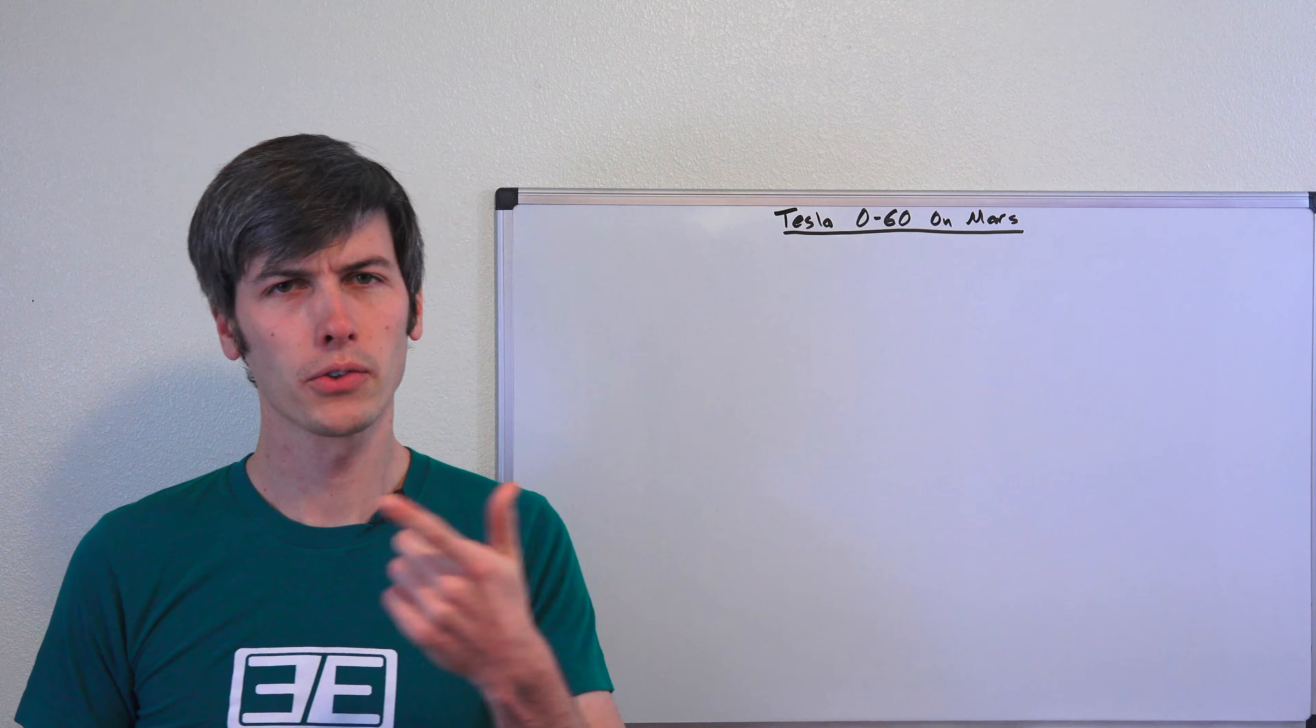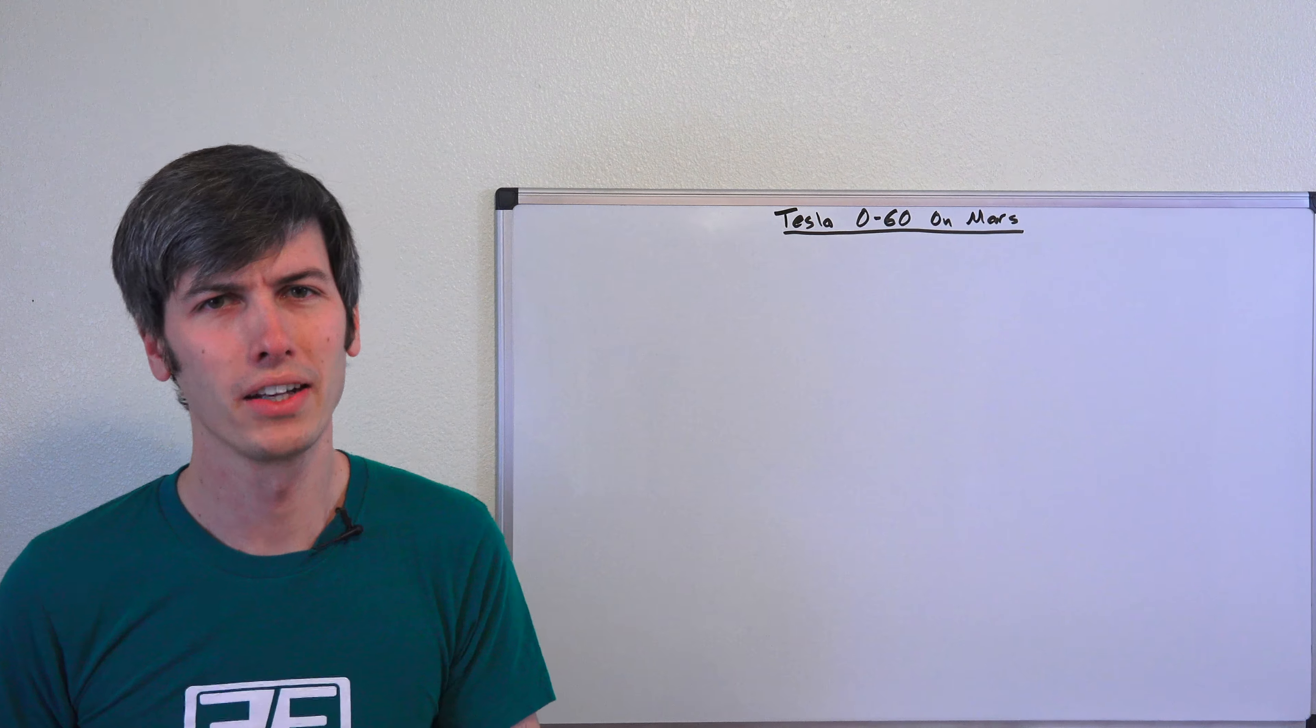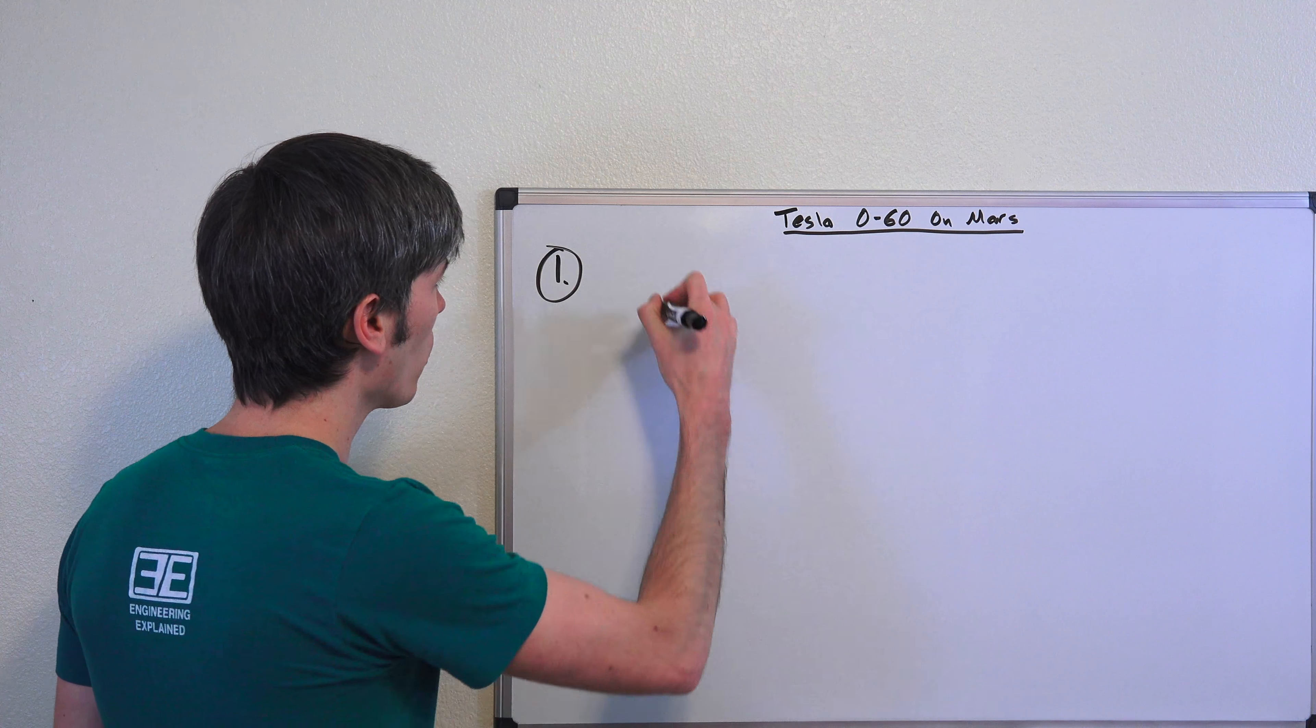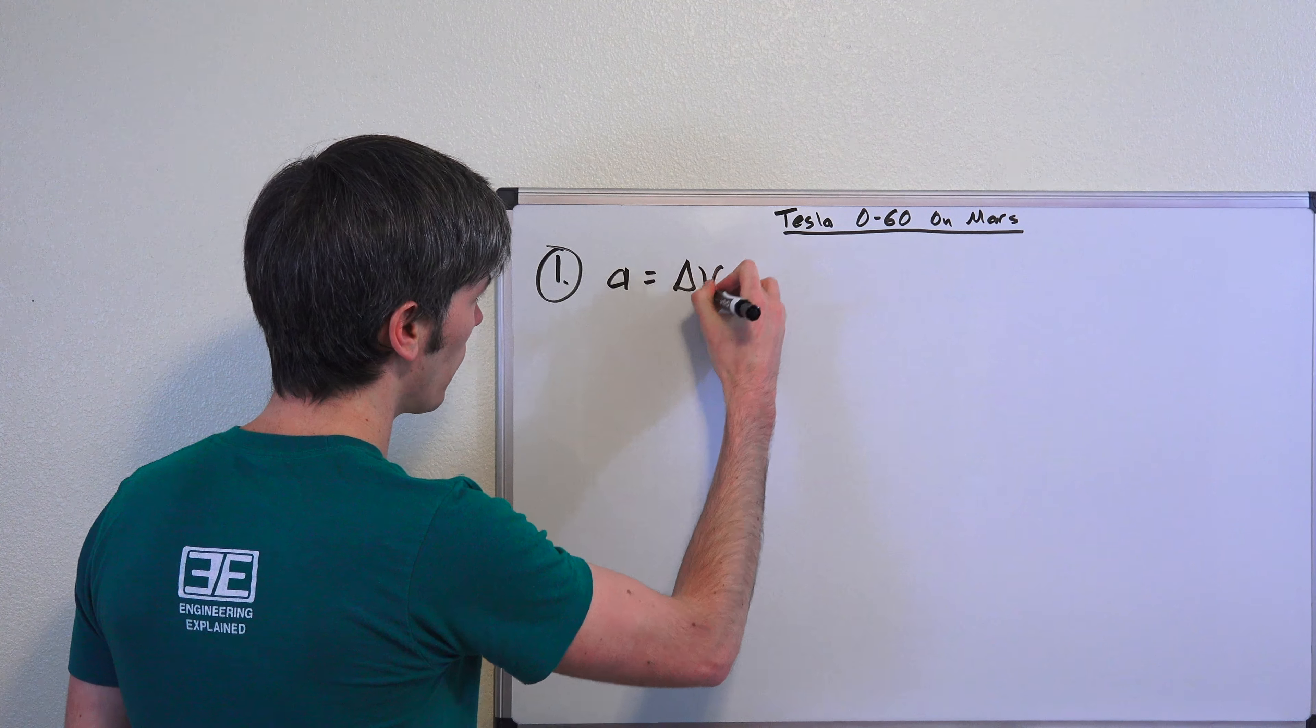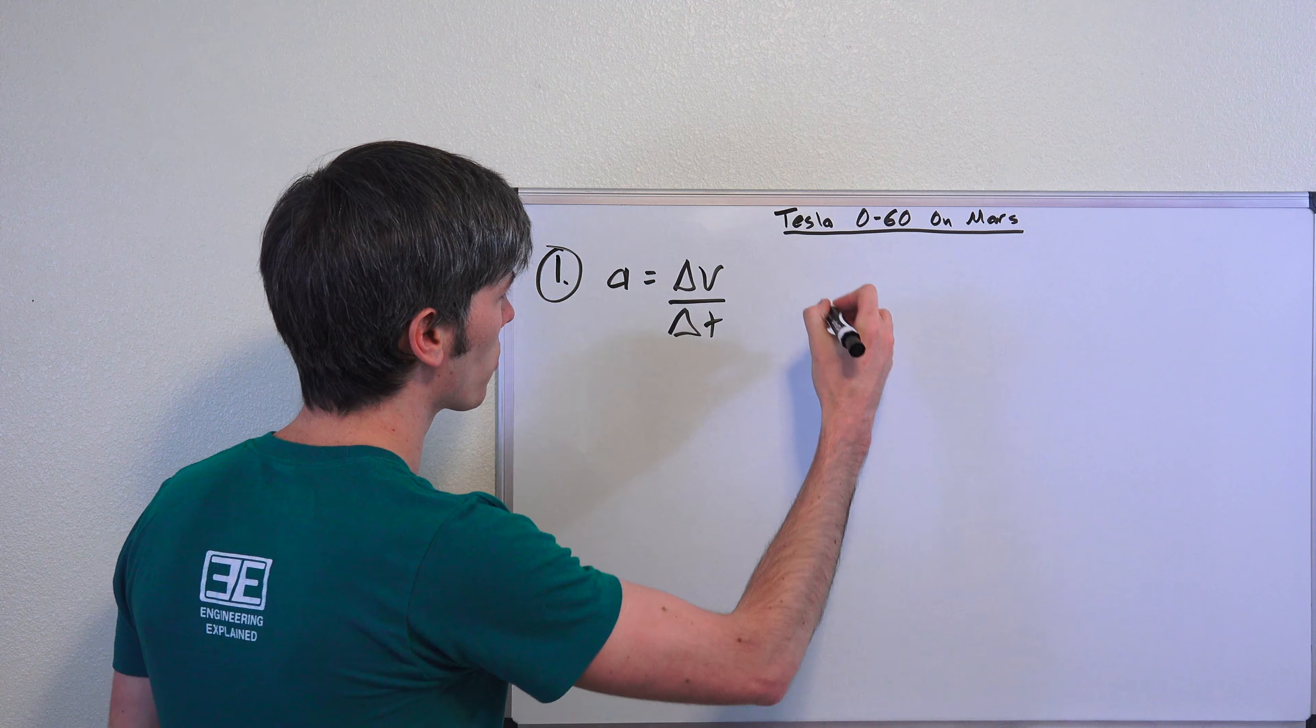So in order to figure this out, first of all we need to know the frictional coefficient of the tires on the Tesla Roadster. So how are we going to figure this out? Well the first thing we're going to do, we know that average acceleration is equal to the change in velocity over the change in time.